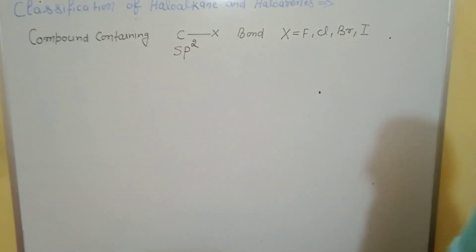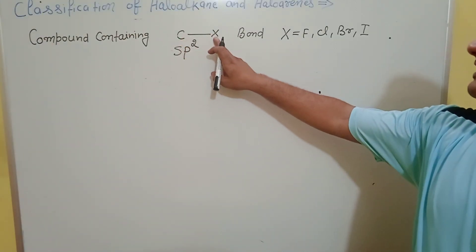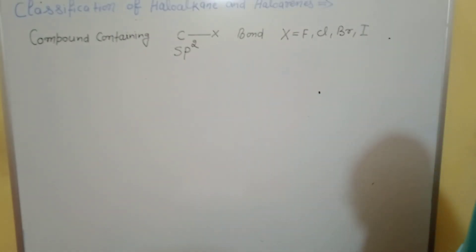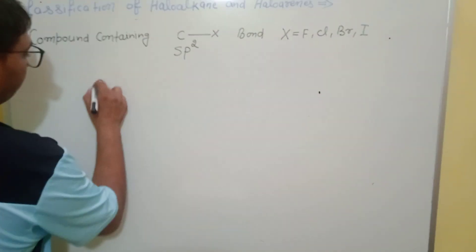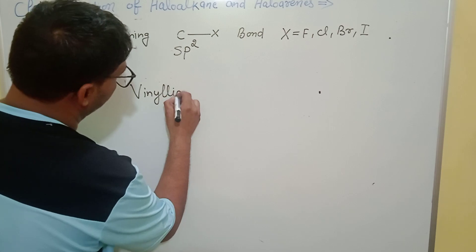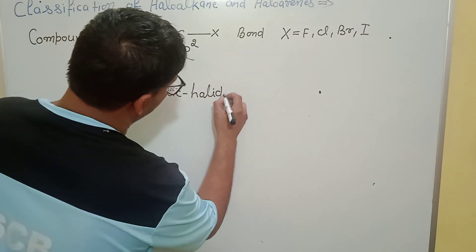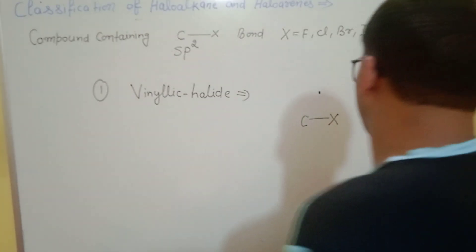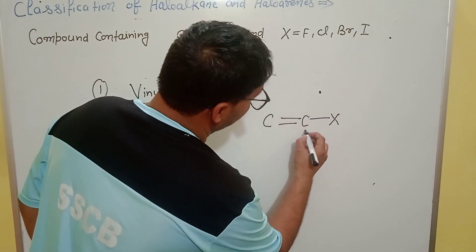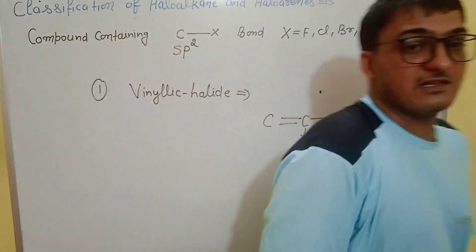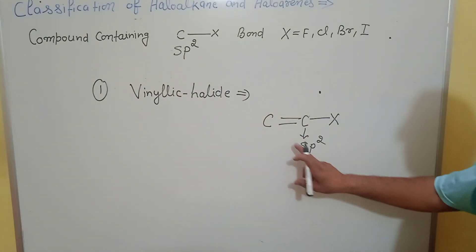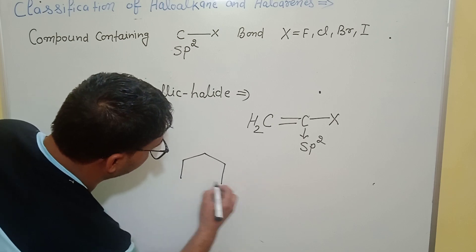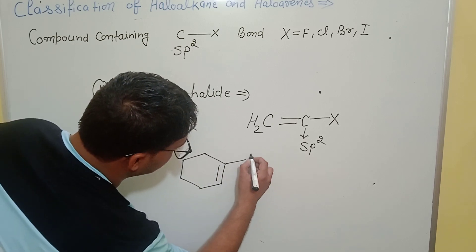When the carbon containing the halogen has sp2 hybridization, the first form is the vinylic halide. In a vinylic halide, the carbon bearing the halogen is directly attached to a carbon-carbon double bond, making it sp2 hybridized. This compound is called a vinylic halide.